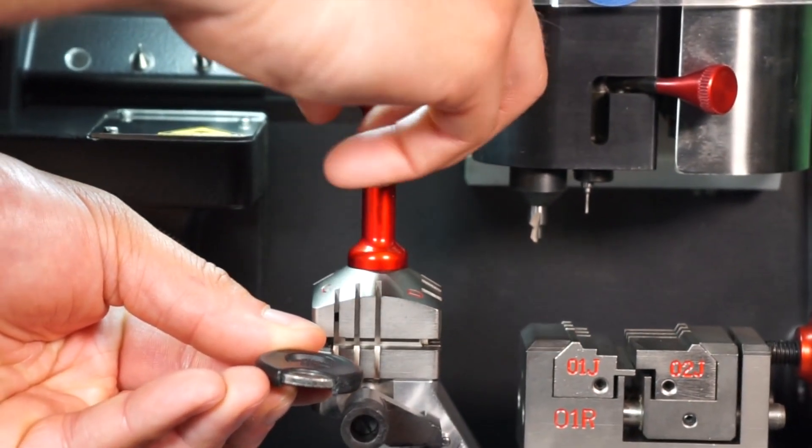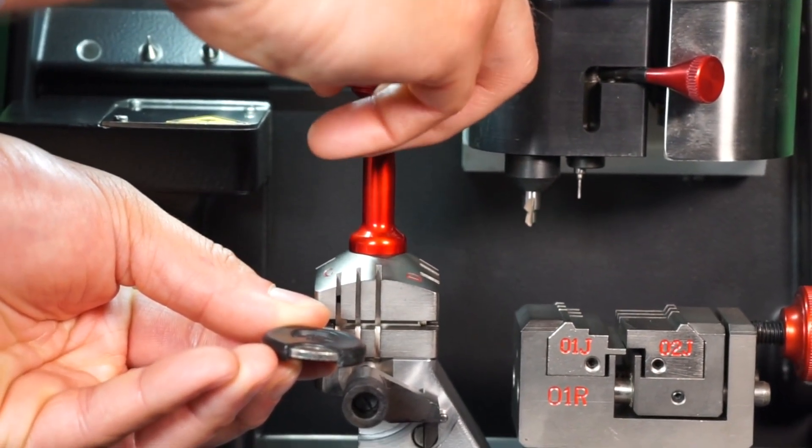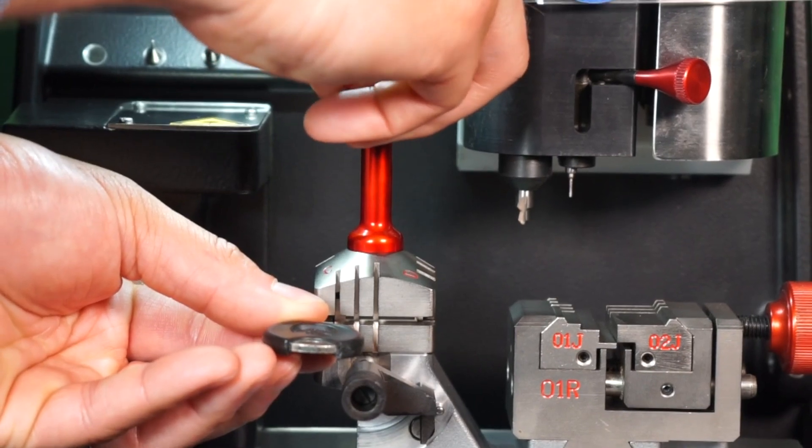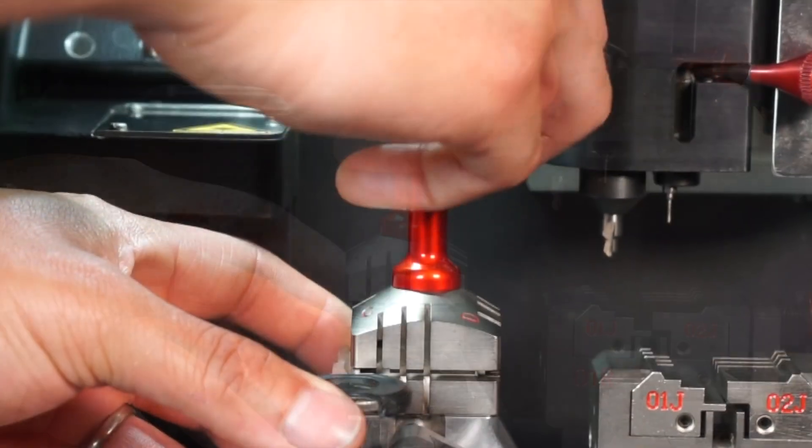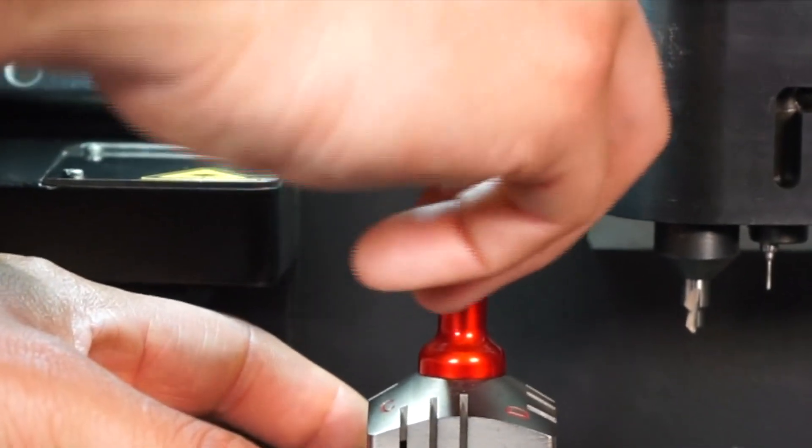It features a groove that helps you hold automotive keys in place. I'm going to clamp this key in position and put it into the groove of that clamp. As you can see, I can slide this key in and out of that groove.